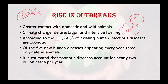According to OIE, 60 percent of existing human infectious diseases are zoonotic in nature, meaning they spread from animals to humans. Furthermore, 75 percent of emerging human infectious diseases have animal origin. Of the five new human diseases appearing every year, three of them have an animal source or origin.